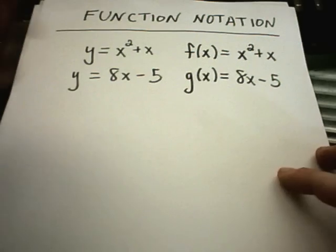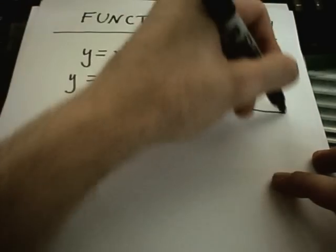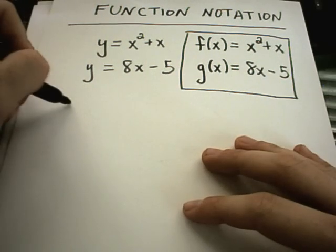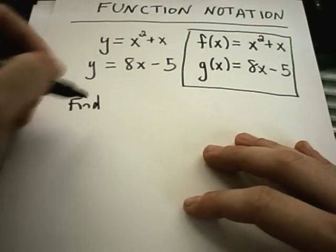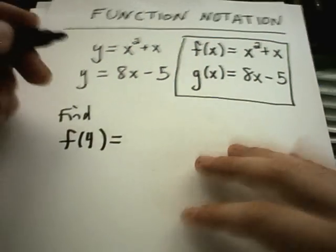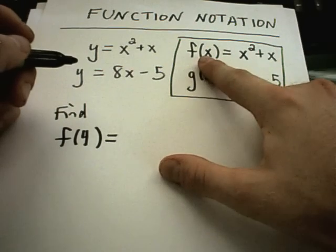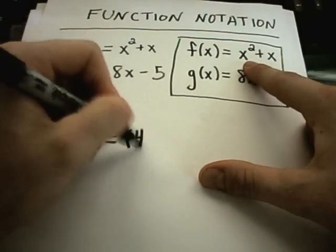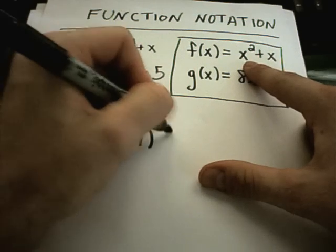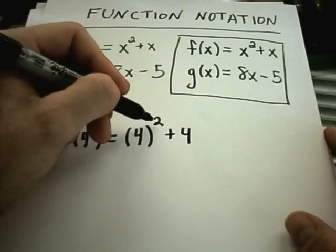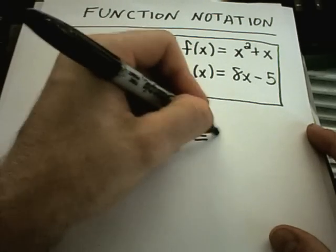From there you can just talk about evaluating a function. So suppose I use these two equations that I have here. If somebody said find, say, f of 4, well all I do is I find my f equation and everywhere there's an x, I just plug in simply the number 4 and then I simplify it down.